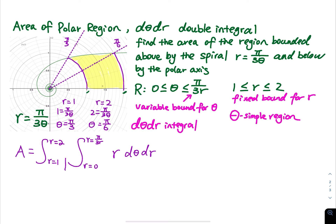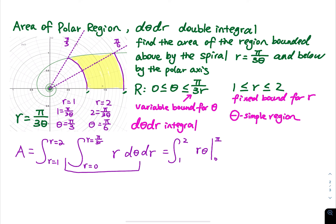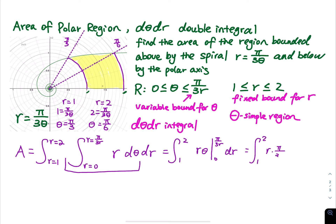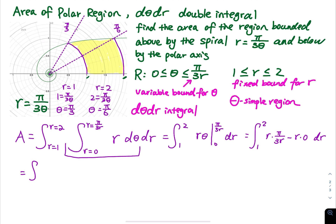We integrate the inner integral first with respect to theta, treating r as a constant. This gives r times theta evaluated from theta equals 0 to theta equals pi over 3 r, times dr. Plugging in, we get r times (pi over 3 r) minus r times 0, which simplifies — the r's cancel — leaving pi over 3 dr.